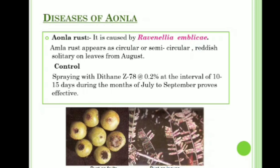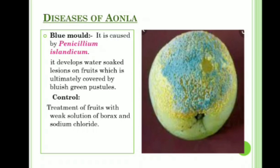Diseases of Amla — first is Amla rust, caused by Ravenelia emblicae. It appears as circular or semicircular solitary spots on leaves from the beginning of August. Control: spraying with Mancozeb (Indofil M-45) at 0.2 percent at intervals of 10 to 15 days during July to September proves effective.